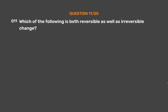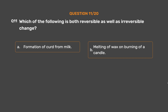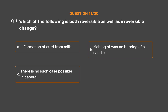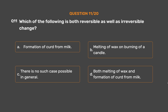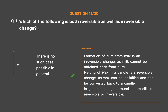Question number 11: Which of the following is both reversible as well as irreversible change? Option A: Formation of curd from milk. Option B: Melting of wax on burning of a candle. Option C: There is no such case possible in general. Option D: Both melting of wax and formation of curd from milk. The correct answer is Option C, there is no such case possible in general. Formation of curd from milk is an irreversible change, as milk cannot be obtained back from curd. Melting of wax in a candle is a reversible change, as wax can be solidified and converted back to a candle. In general, changes around us are either reversible or irreversible.